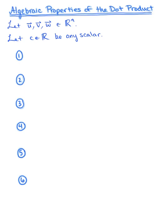So here we go. To begin, we want to let vector u, vector v, and vector w be three arbitrary vectors in n-dimensional space. We also want to let c be any scalar. Property number one, which we established in the previous example: vector u dotted with vector v is equivalent to vector v dotted with vector u. We produce that same scalar-valued result regardless of the order in which we dot the vectors.